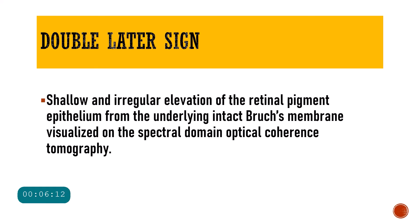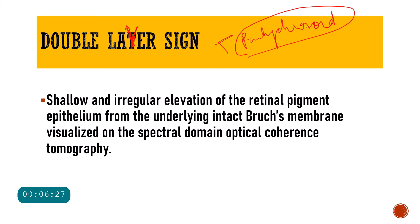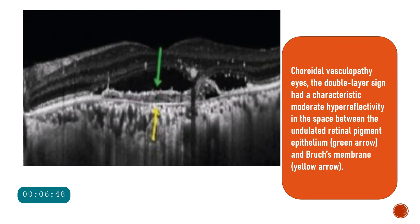Sometimes a double layer sign is also associated with polypoidal choroidal vasculopathy; however, this is not very specific and can be seen in other disorders within the pachychoroid spectrum. The double layer sign occurs when the RPE and Bruch's membrane get separated by hyper-reflective material, and this is seen on spectral-domain OCT as two hyper-reflective layers. In this picture you can see the double layer sign — one layer is the RPE and the other is Bruch's membrane, with moderate hyper-reflectivity in the space between them.